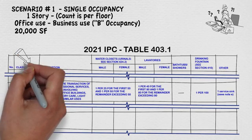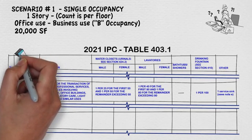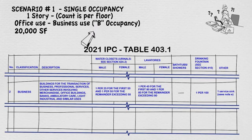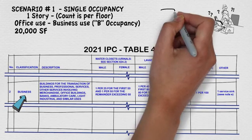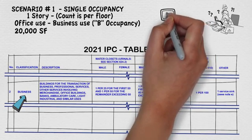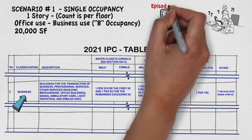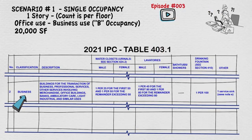On the second to the left column, you will see the classification, which references the occupancy group. In our case, an office building is a B occupancy group — the B stands for business. If you would like to know more about occupancy groups, check out ArchiCorner episode number 3.